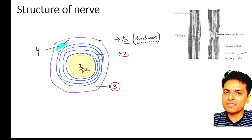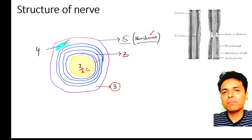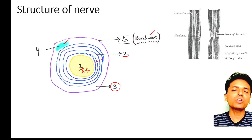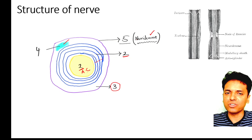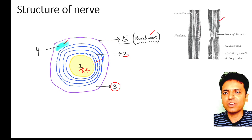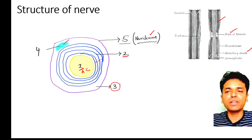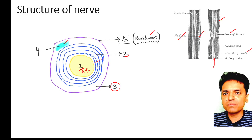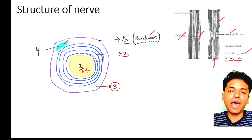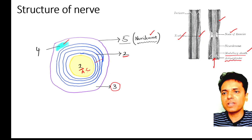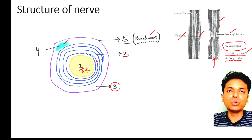The Schwann cell also has a membrane of its own, called the neurolemma, which is the outermost covering of the axon. In the longitudinal section diagram, we can see the myelin sheath, the node of Ranvier, and the nucleus of the Schwann cell. The myelin sheath is also referred to as the medullary sheath. The centermost part is the axis cylinder or axon proper, surrounded by the medullary sheath, with the neurolemma as the outermost layer.